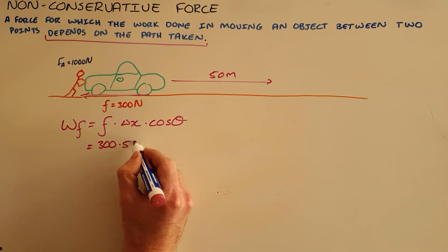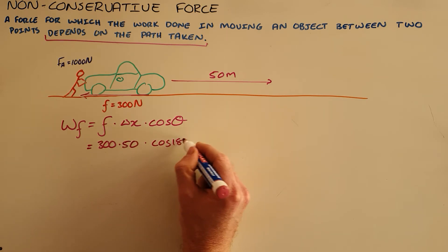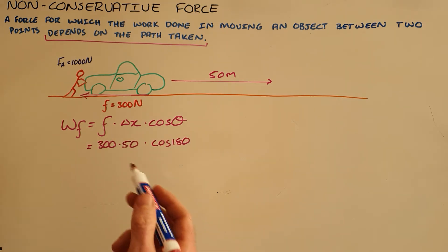multiplied by the displacement of 50 meters multiplied by the cosine of the angle between the two which is 180 degrees since they are opposite to each other.